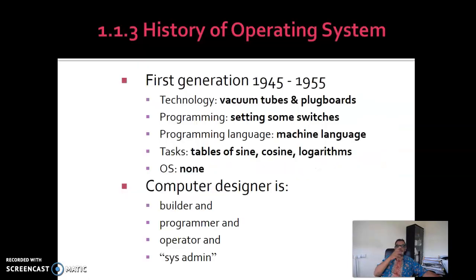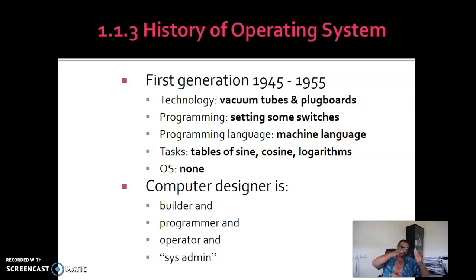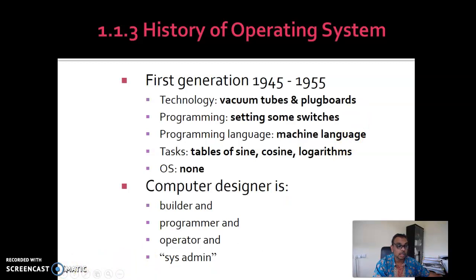A little bit of history of operating systems. We started with the first generation in 1945 — you have vacuum tubes. In those times, you did not have flat screens; you had vacuum tubes, those big TV-like screens.